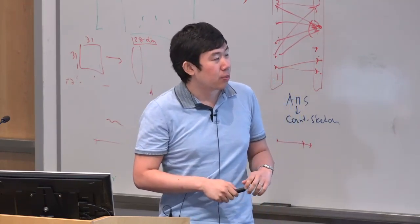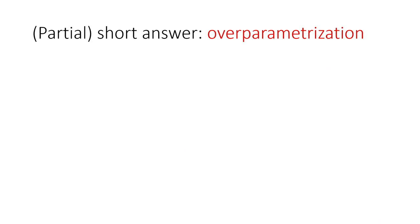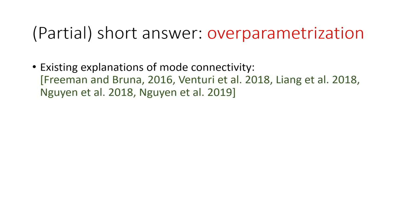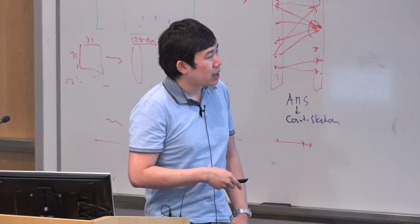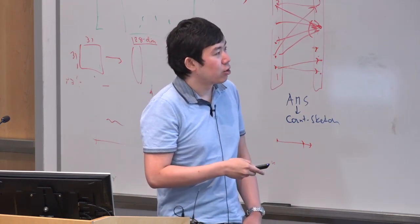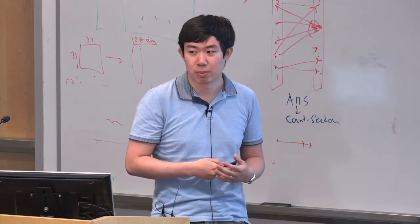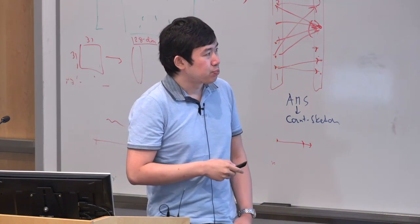So why is this? There has been some explanation of mode connectivity, and the short answer is over-parameterization — like the answer to many other questions heard in this workshop. Existing works explain mode connectivity by showing that if the network has special structure — either a two-layer or multi-layer network with some special connections — and if the network is highly over-parameterized, meaning the number of neurons is larger than the number of training samples, then local minima are connected.